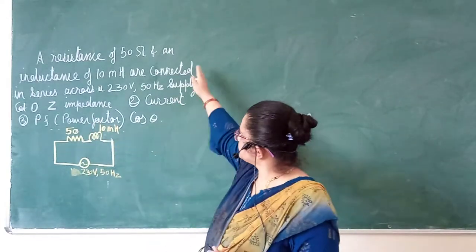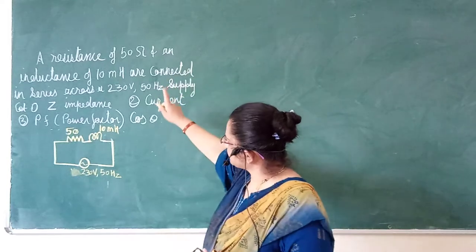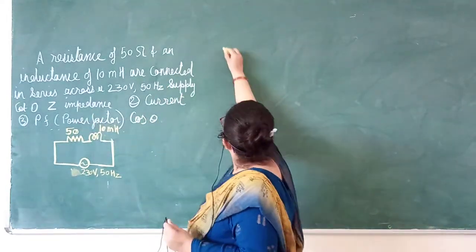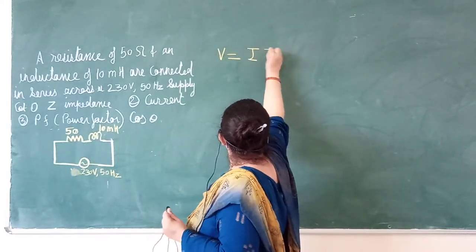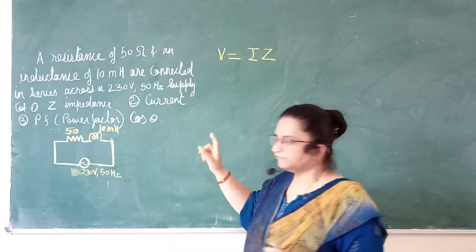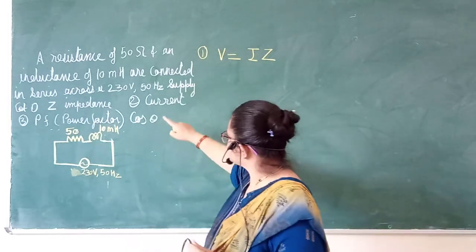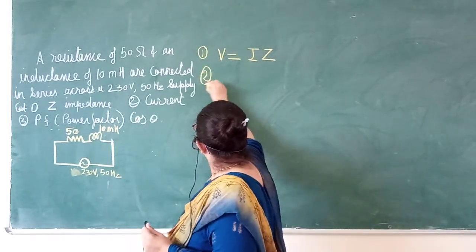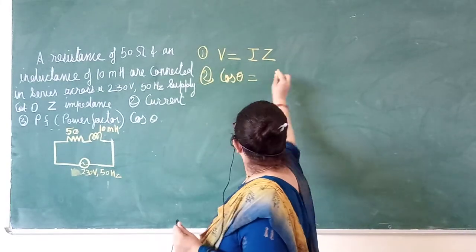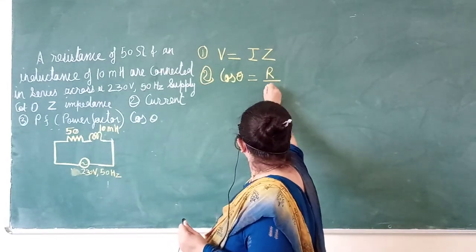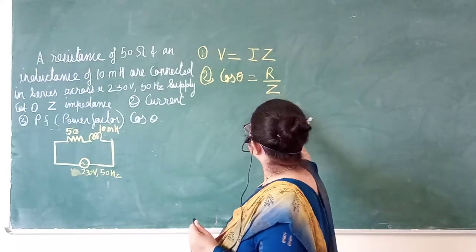Whenever this type of numerical comes, you have to write the formulas first. The formula for impedance: V is equal to I into Z. This is the first formula. Second is power factor — cos theta is equal to R upon Z.